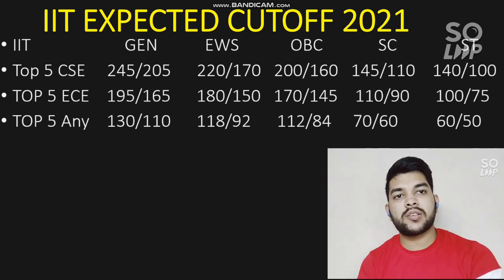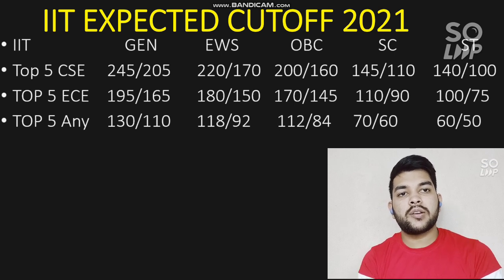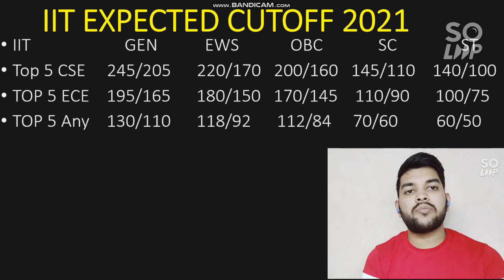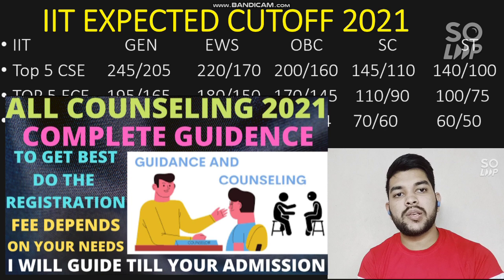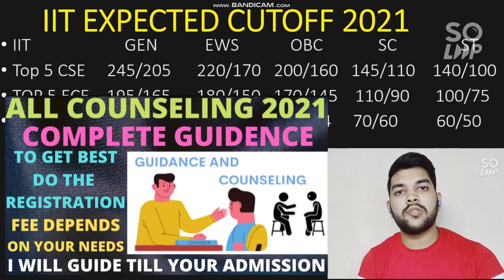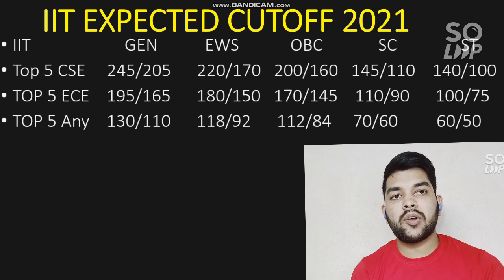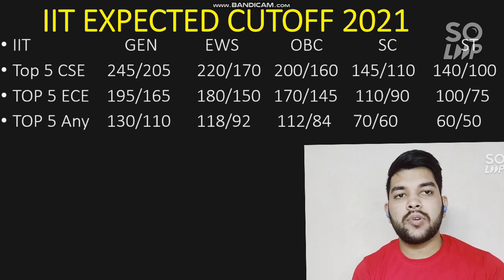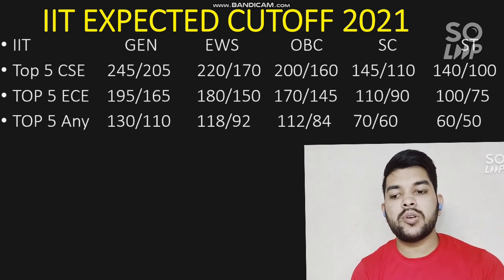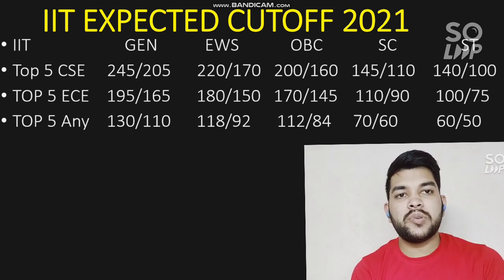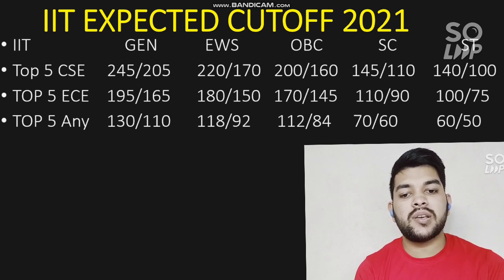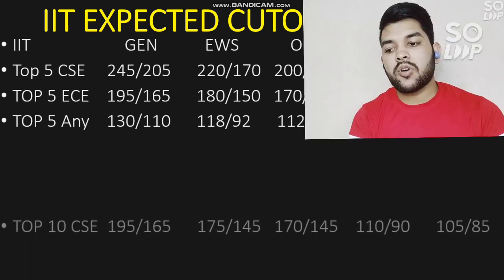For top 5 IIT with any branch: General male needs 130 marks, female 110 marks. For EWS: 118 and 92 marks. For OBC: 112 and 84 marks. For SC: 70 and 60 marks. For ST: 60 and 50 marks. Counseling is very important here — any mistake and no one can help you afterwards, so it is advisable to take the help of an experienced person.